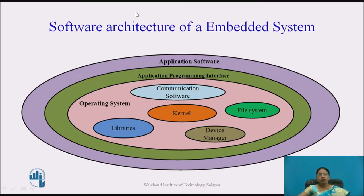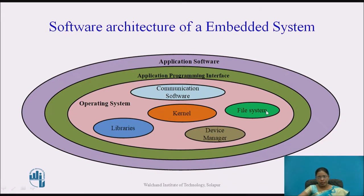This is the software architecture of an embedded operating system. In this you can see there is an operating system, an application programming interface, and application software. The operating system consists of different parts such as kernel, communication software, libraries, device manager, and file system. We will look at the parts of this operating system one by one.